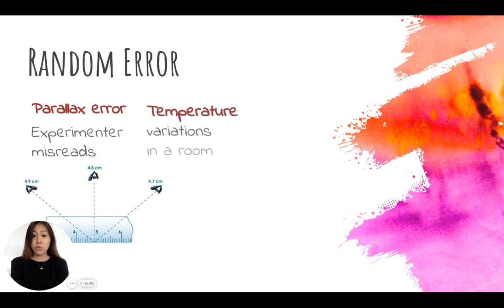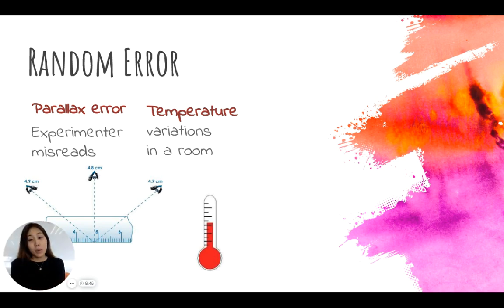It could also be temperature variations in a room. So this means that maybe when you started your experiment it was 24 degrees, and as the lab experimentation went on during that block, the temperature rose because everyone was moving around and more people were coming in to watch the experiments. But you didn't take an account of the temperature changes, so that would also be considered a type of random error.